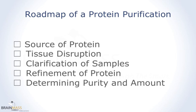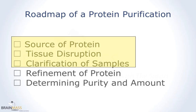So no matter what protein we're going to isolate, we're generally going to follow one simple roadmap. First, we must consider the source of the protein from which we're going to isolate it. Then we must consider how we're going to disrupt the tissue from which the protein came. Then we must take this disrupted tissue and clarify it, separating it into a bulk mixture of proteins. This bulk mixture then has to be refined using chromatography techniques. And then finally, we can determine the purity and yield of the protein from the purification. In part one of this lecture, we're only going to focus on the first three steps of this roadmap, and then in part two, we'll focus on the final two steps.